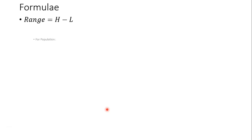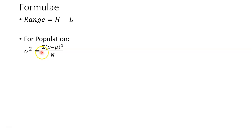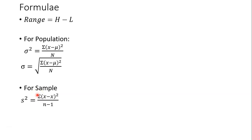For population variance, we use the Greek letter sigma squared, and it equals the sum of (X minus mu) squared divided by capital N. For population standard deviation, it's the square root of that same expression. For sample variance, we use small letter s squared, equal to sigma (X minus X-bar) squared divided by small n minus one. For sample standard deviation, we use small s, which is the square root of sigma (X minus X-bar) squared divided by n minus one.